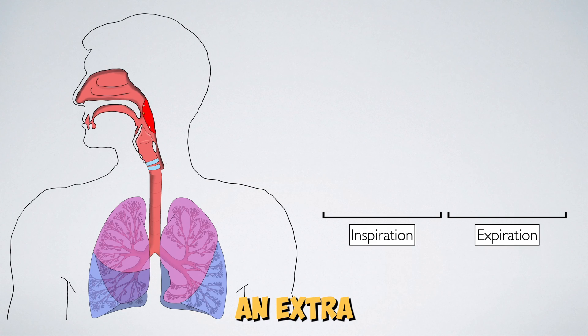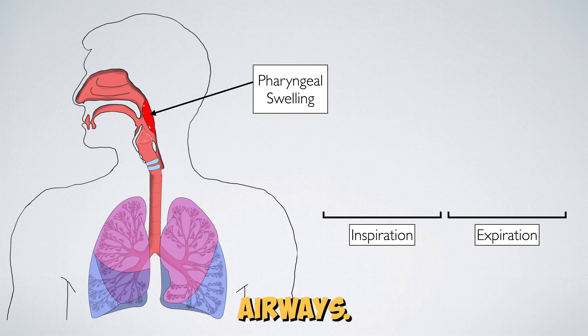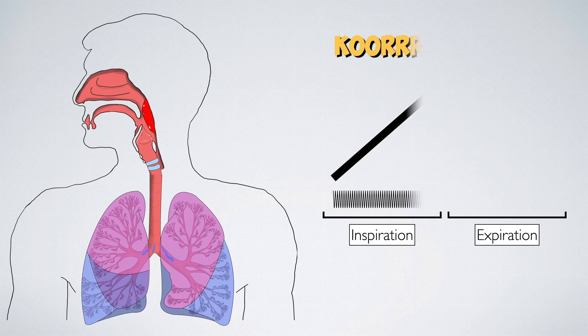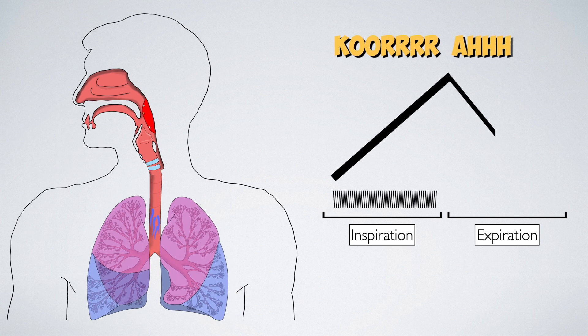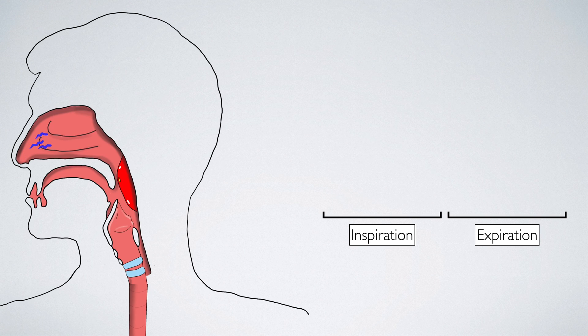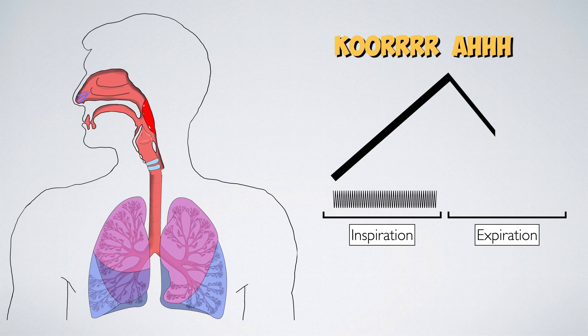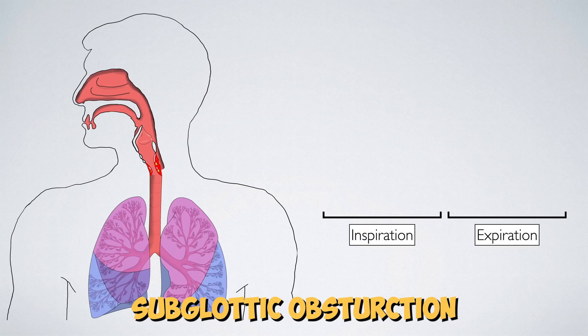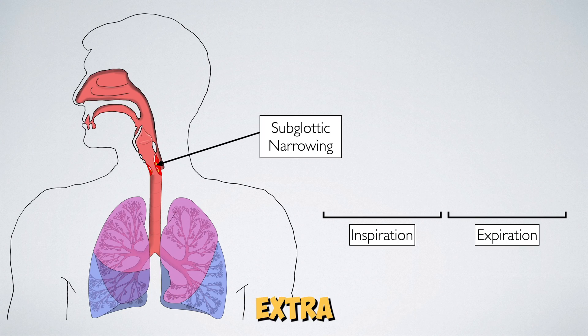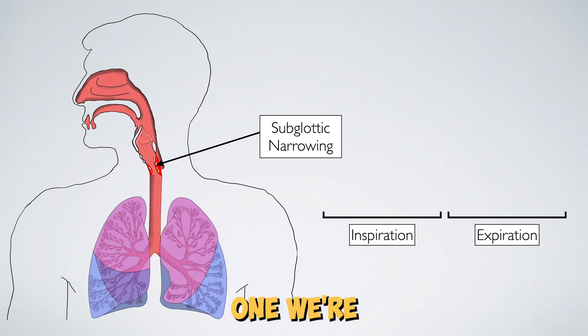We'll now take a look at two examples of stridor using an animation. In the first example, there is an extrathoracic obstruction of the upper airways — this will produce an inspiratory stridor. In the second example, there is a subglottic obstruction in the extrathoracic airway — this will produce a biphasic stridor. We're going to start slow and then speed up to real time.